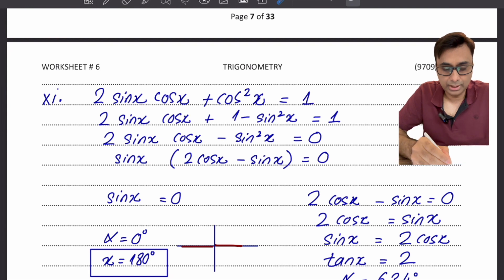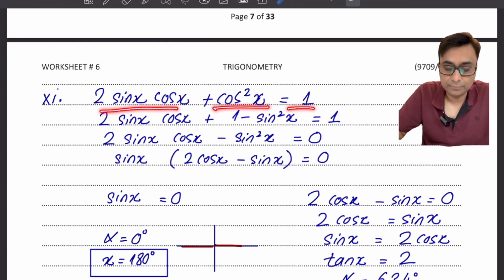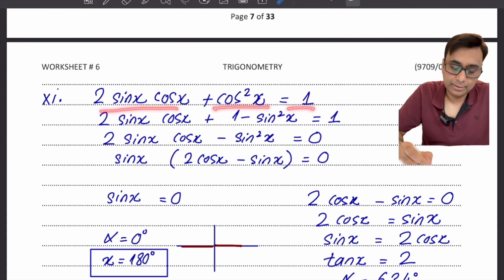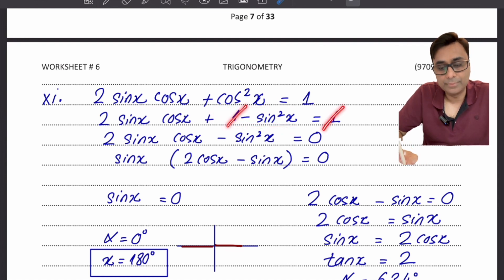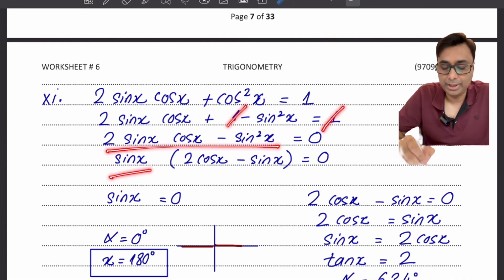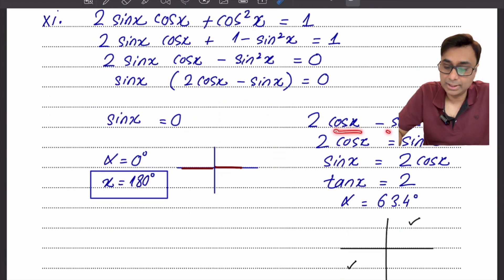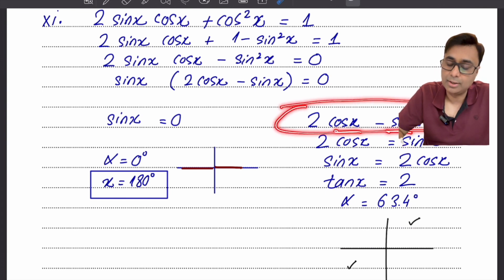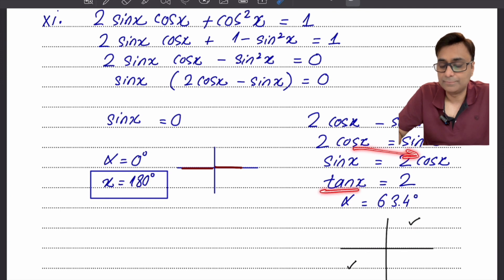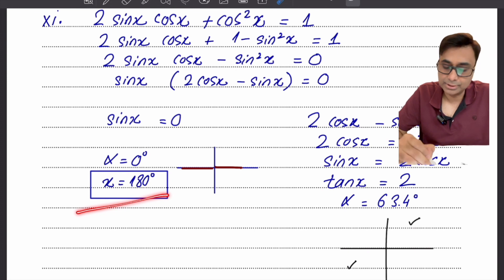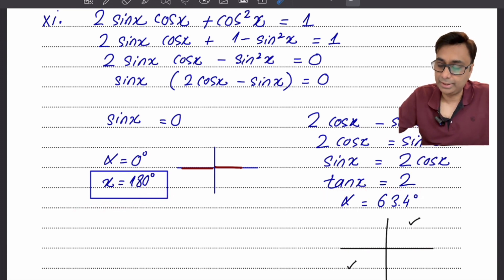For an equation with 2 sin x cos x and cos² x, use a trigonometric identity. Applying the identity helps cancel the troublesome term, allowing you to factor. One factor gives sin x equals 0. The other factor contains sin x over cos x, which equals tan x. So rewrite it as tan x equals 2 and solve — sin x equals 0 gives answers along the axes and tan x equals 2 gives answers in the first and third quadrants.